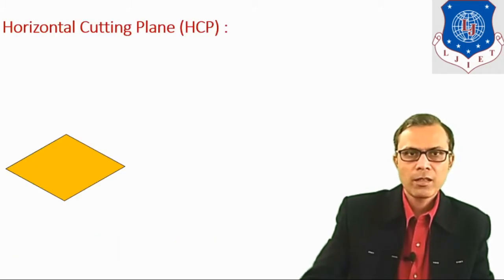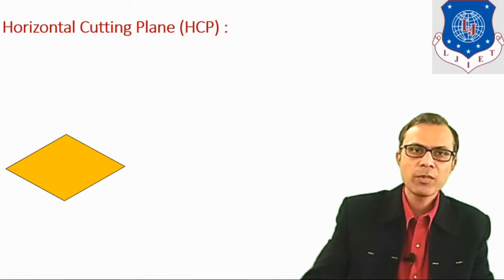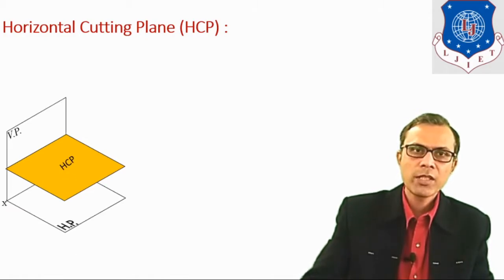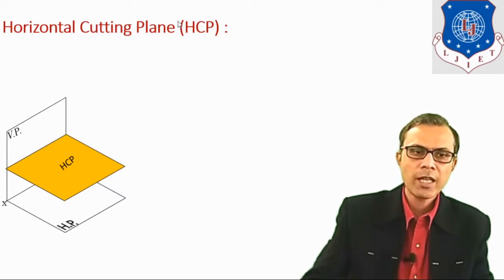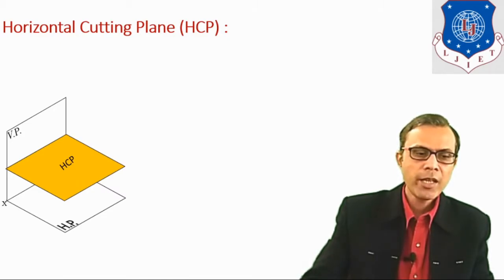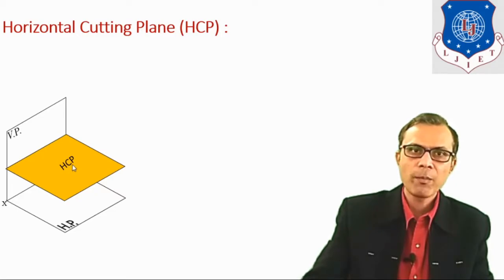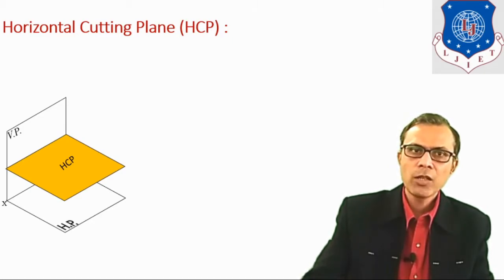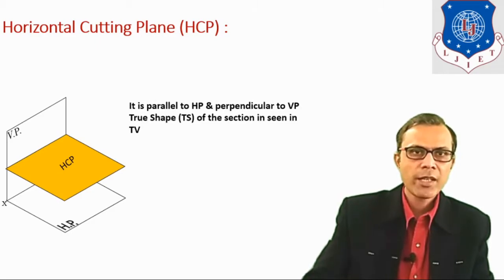Let us understand what are the different types of cutting plane or section plane. The first type is the horizontal cutting plane, in short form written as HCP. Its position is parallel to HP and perpendicular to BP. When we cut any object by this type of cutting plane, the true shape of the section will appear in the top view, that is known as the sectional top view.